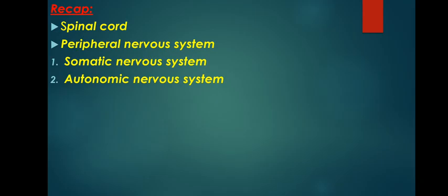The somatic nervous system is the part of the peripheral nervous system responsible for carrying sensory and motor information to and from the central nervous system. The somatic nervous system derives its name from the Greek word 'soma' which means body. It is responsible for transmitting sensory information as well as for voluntary movement. The system contains two major types: motor neurons and sensory neurons.